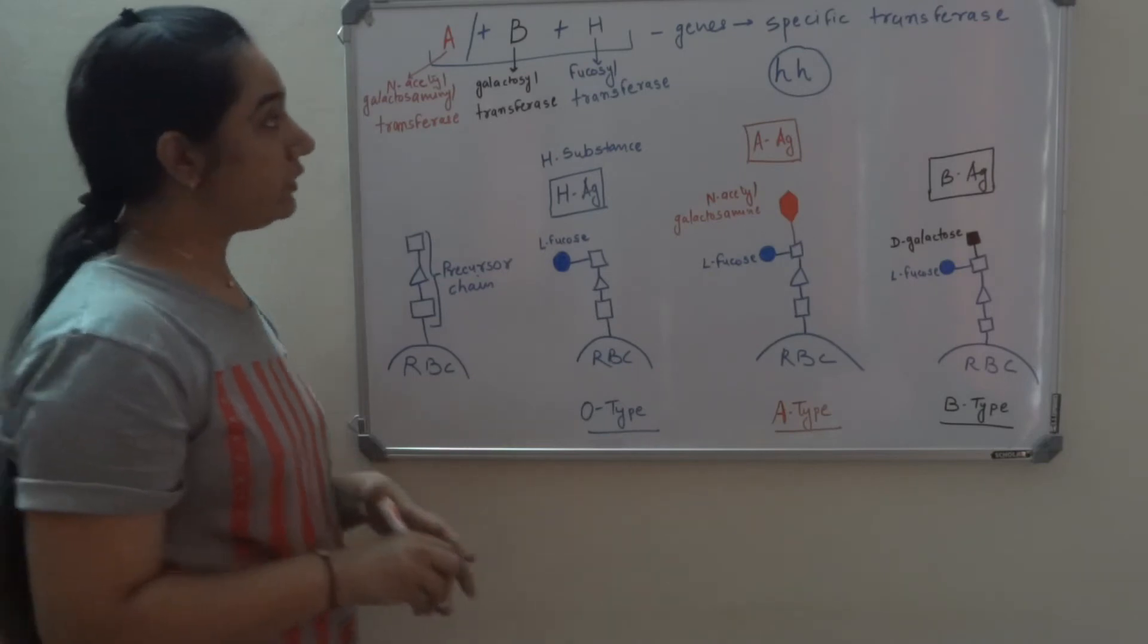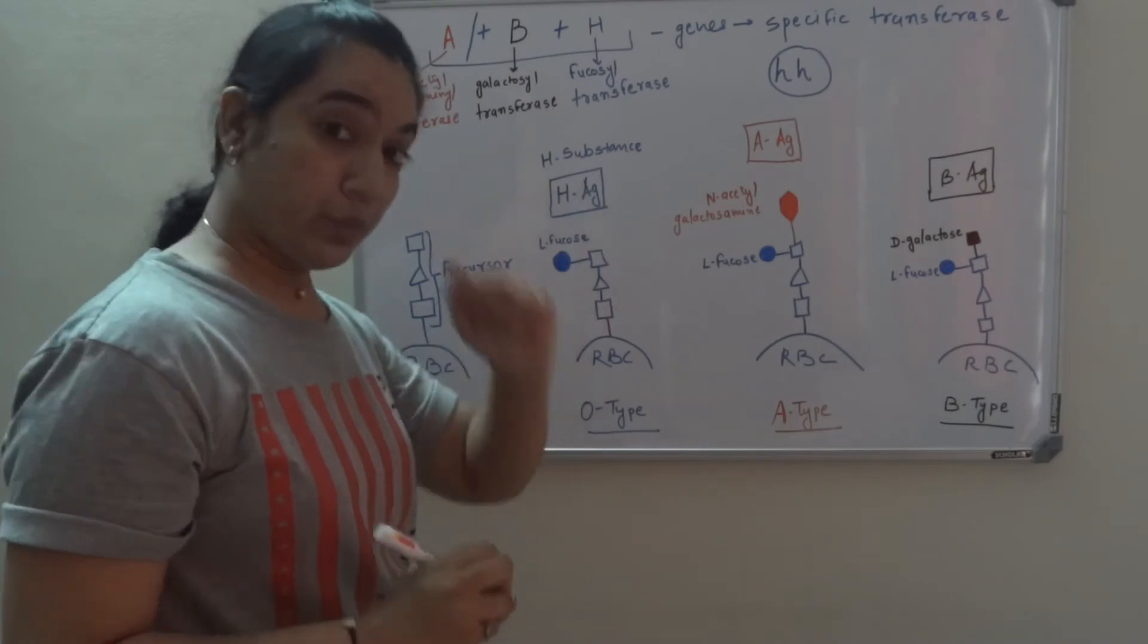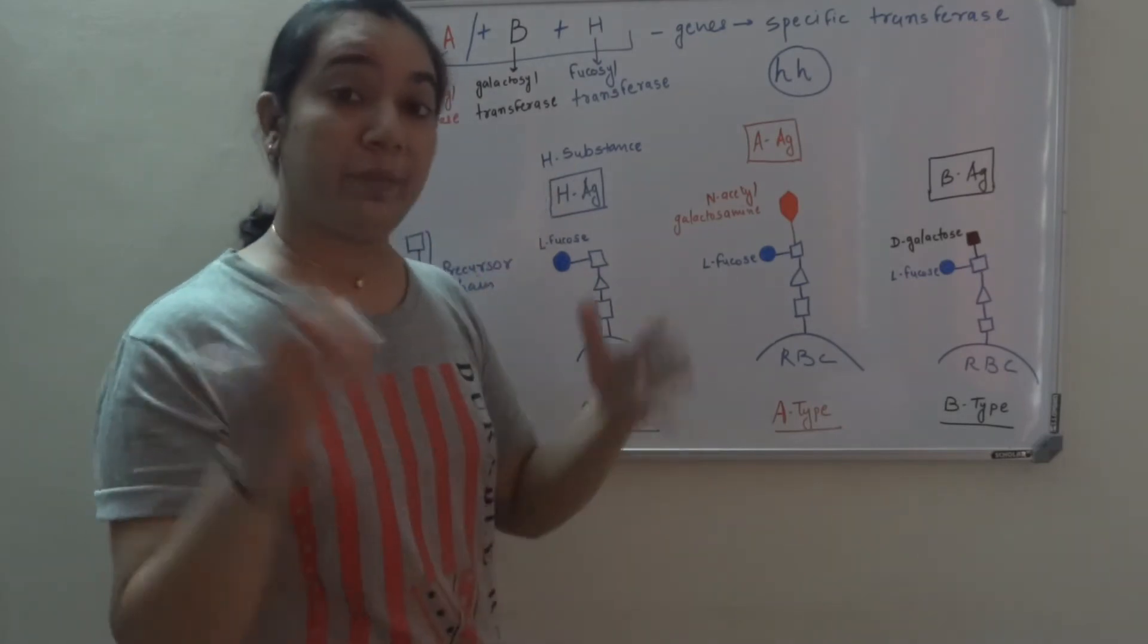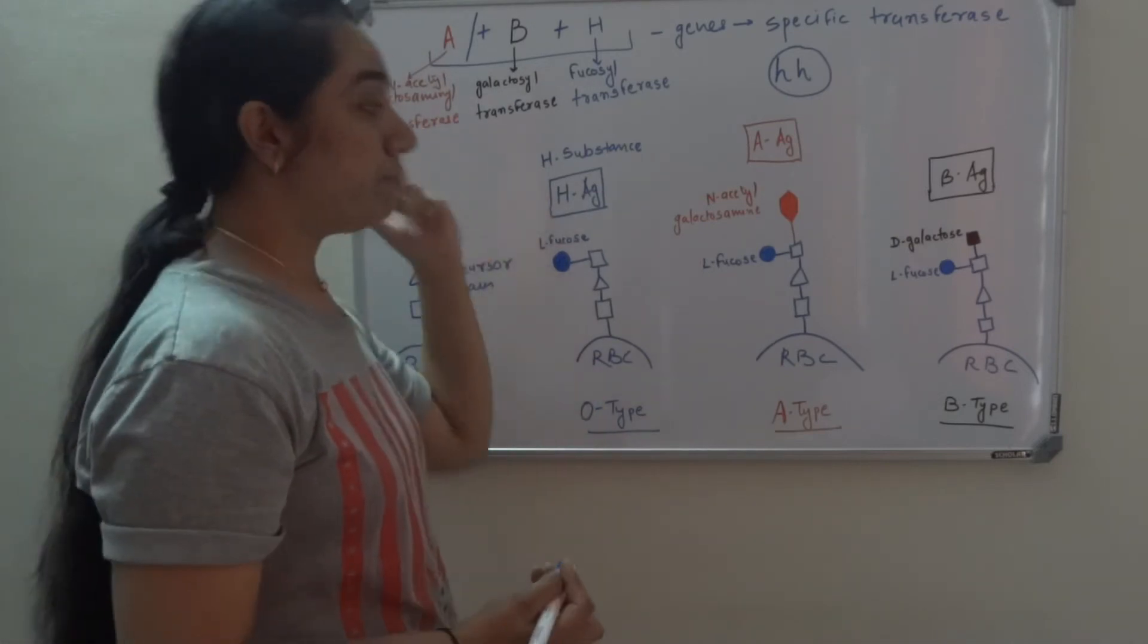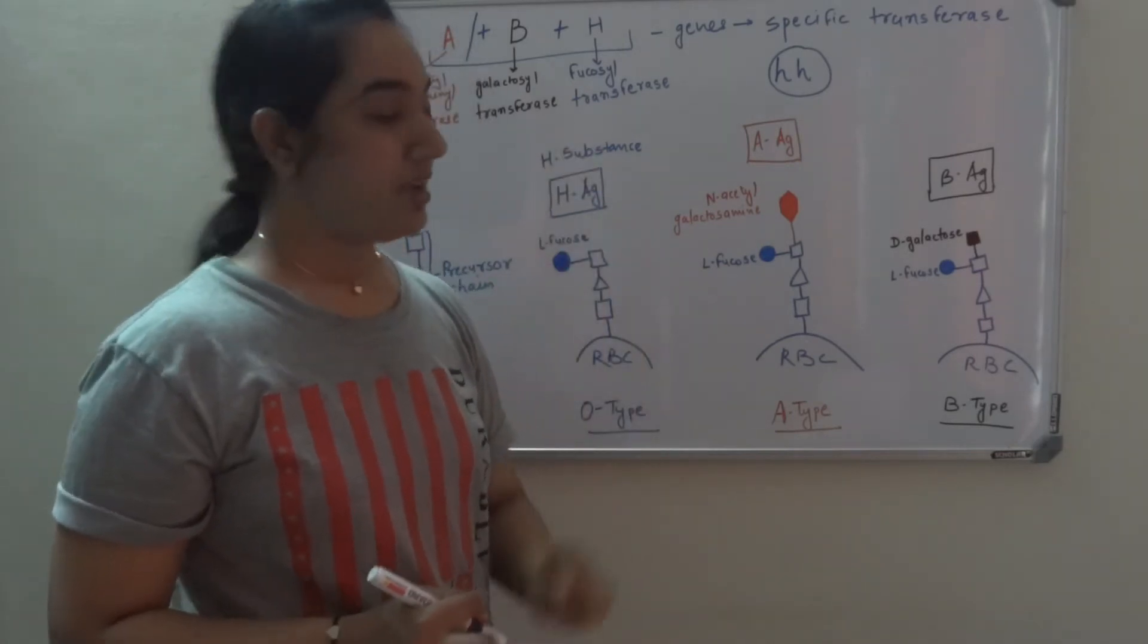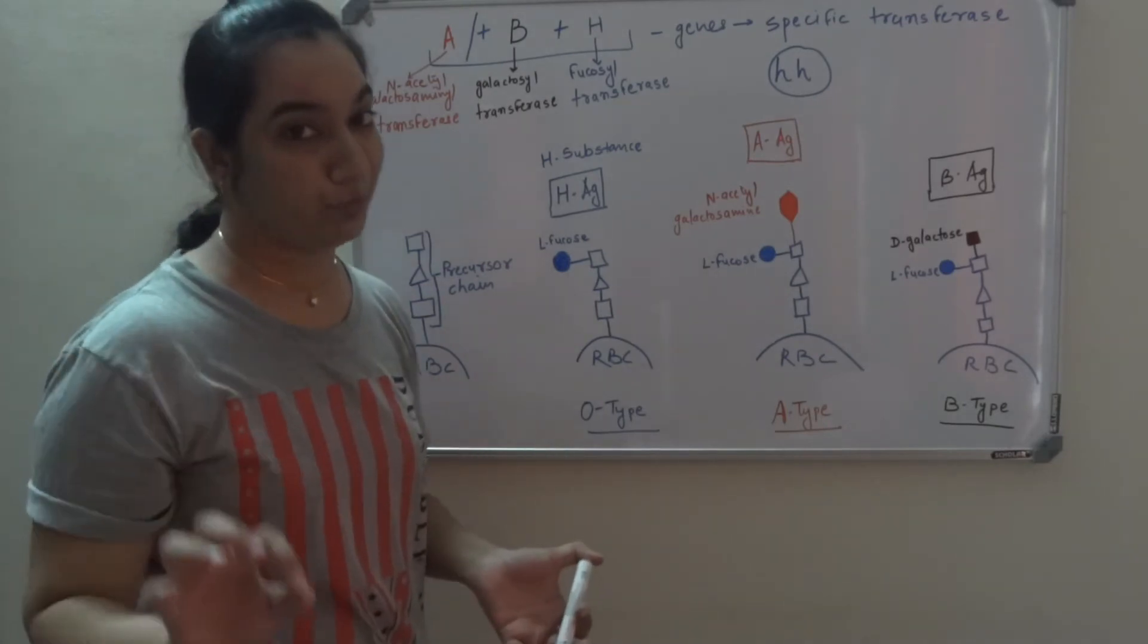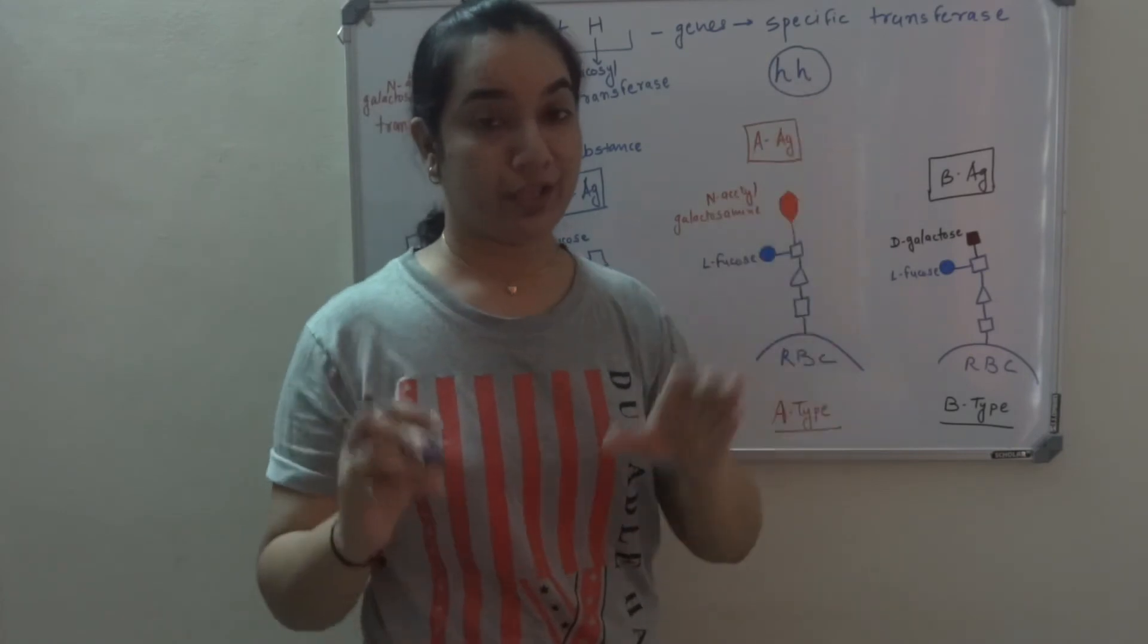Now even though such individuals may carry active or normal A and B gene, which will produce normal specific transferase, but because they don't have H substance, these enzymes fail to add the carbohydrate moiety, even though they contain normal gene. Now such individuals are classified as Bombay blood group, who have the homozygous recessive condition for H gene.